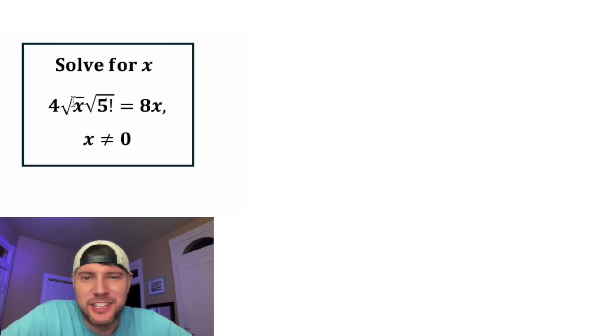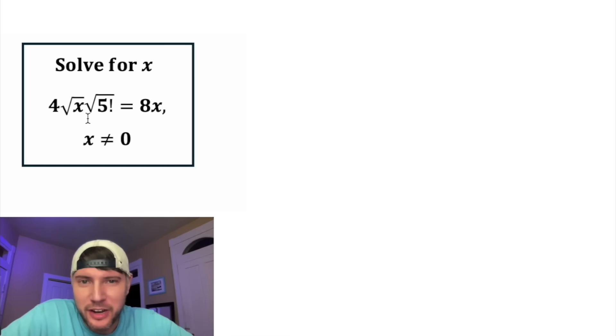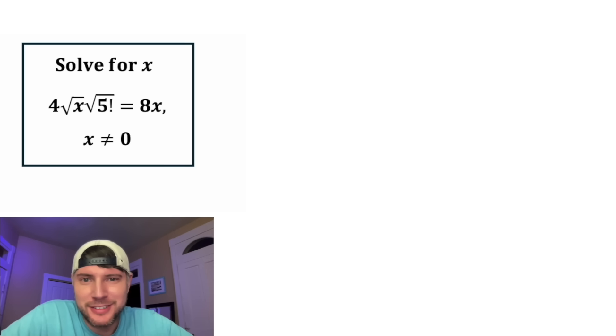Hey guys, this looks like a fun one. It says solve for x. We're given 4 times the square root of x times the square root of the quantity 5 factorial equals 8x, and x is not equal to 0.